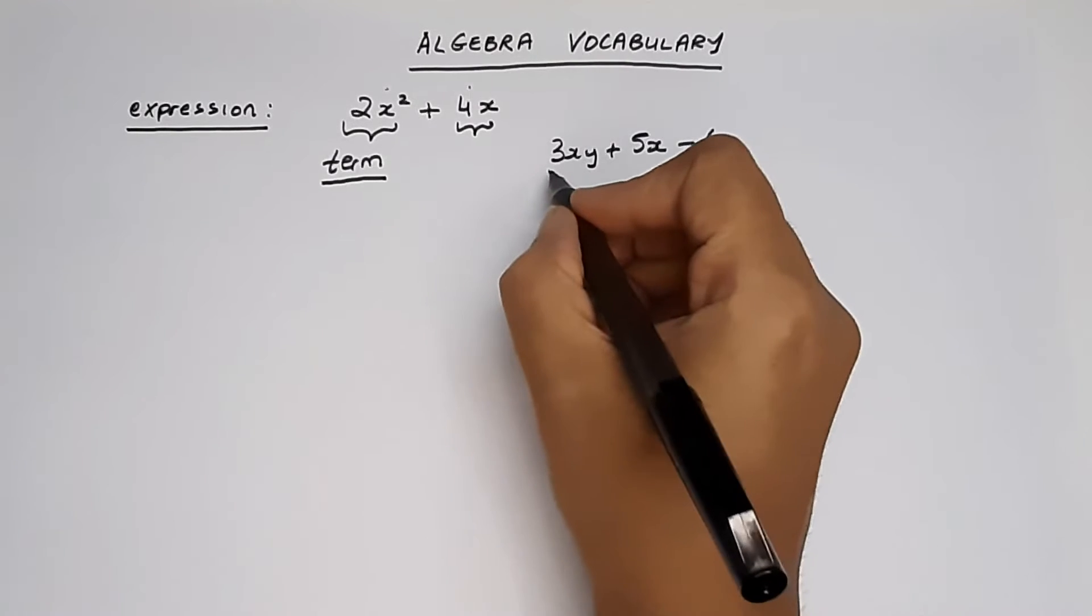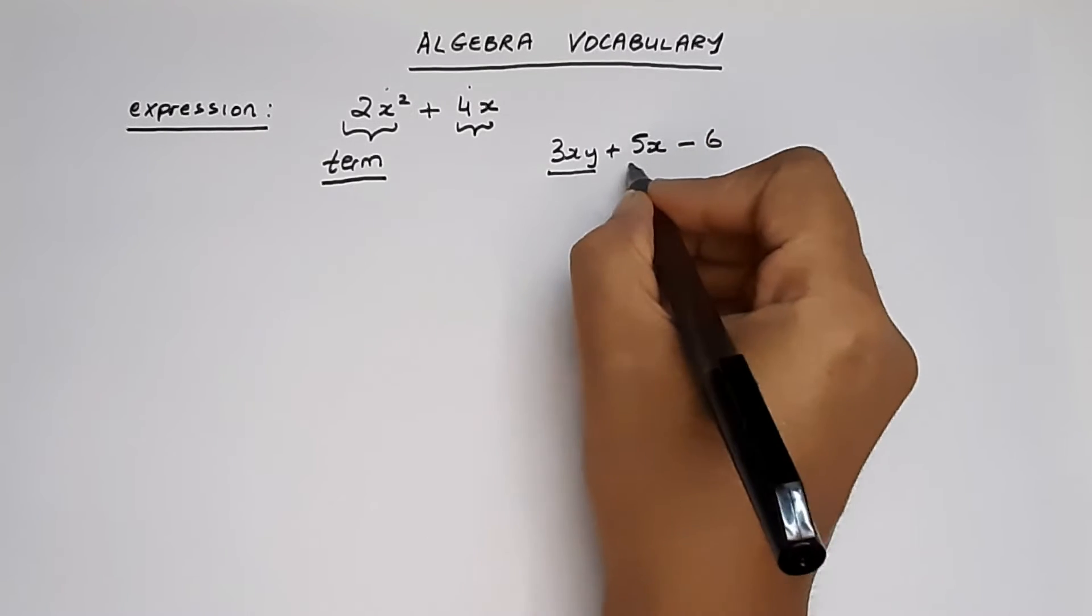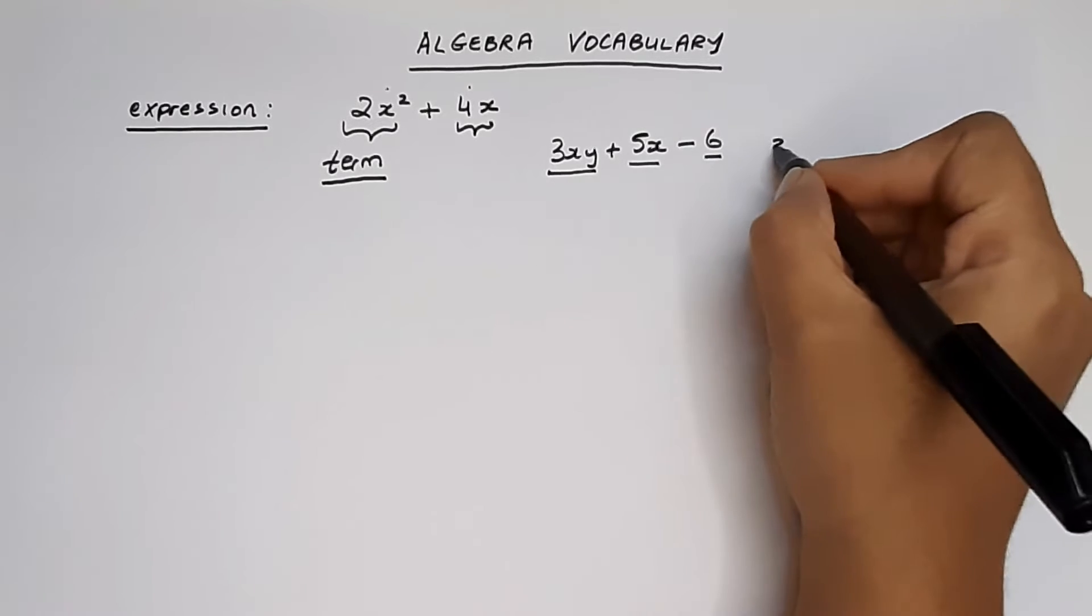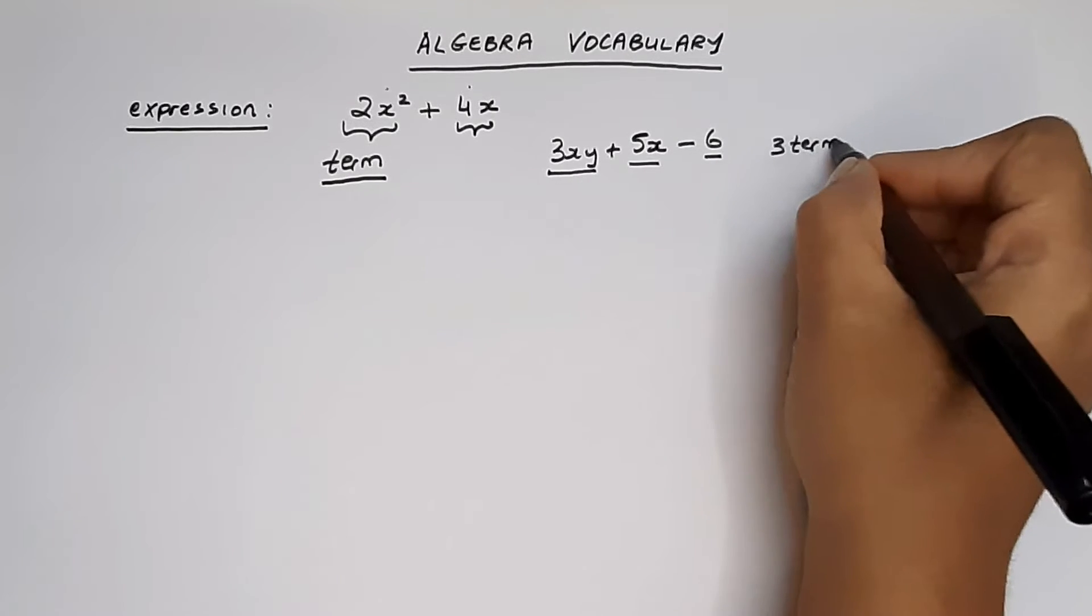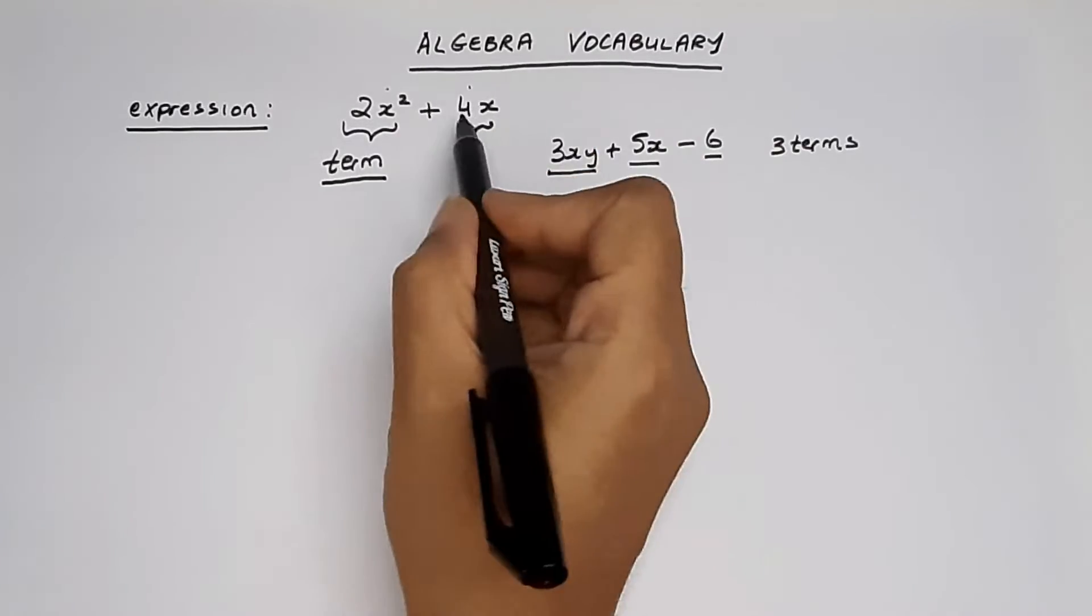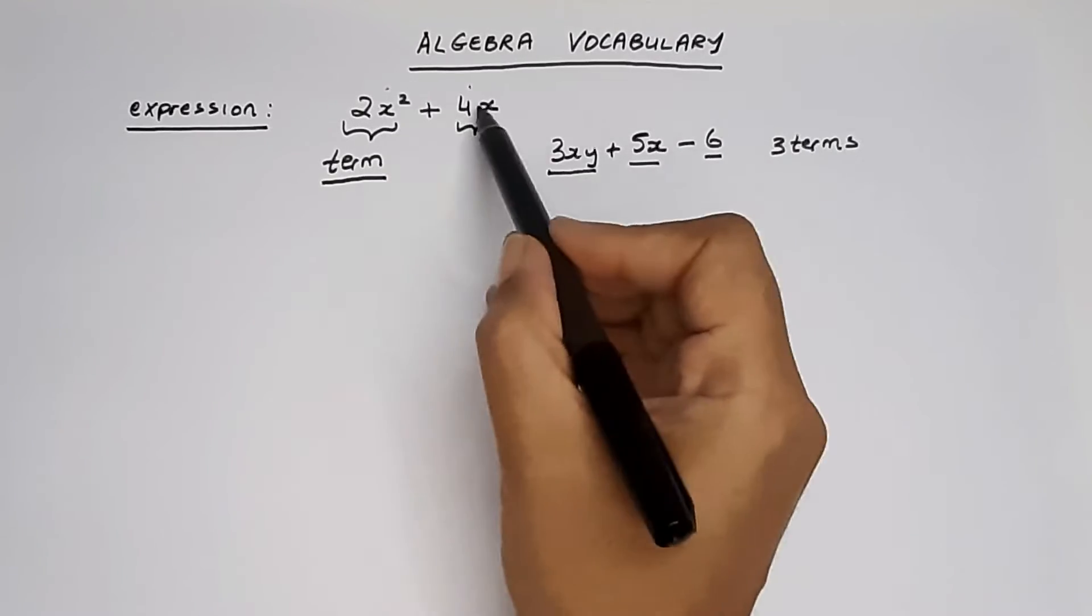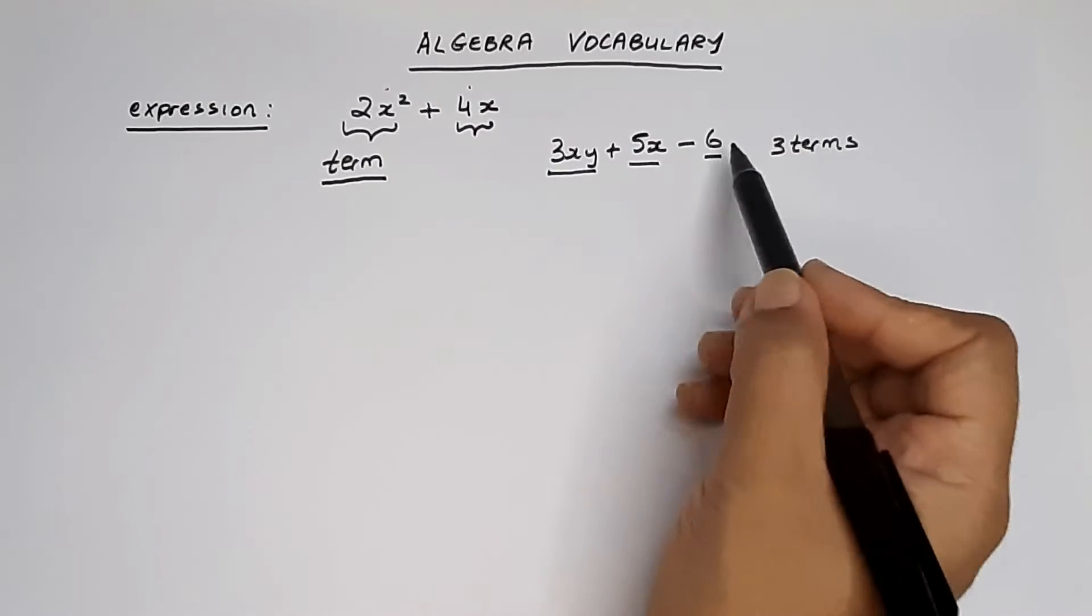Let's look at this expression. The terms are 3xy, 5x, and 6. It has three terms. So this is an expression with two terms here and this expression has three terms here.